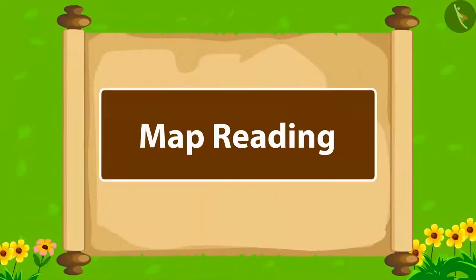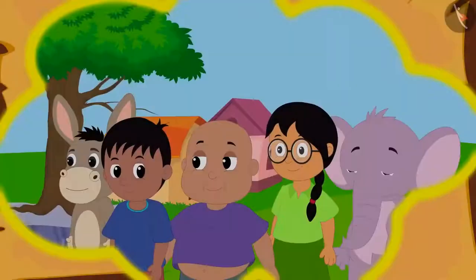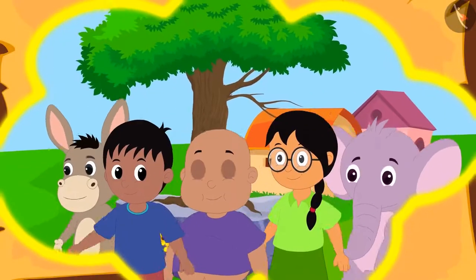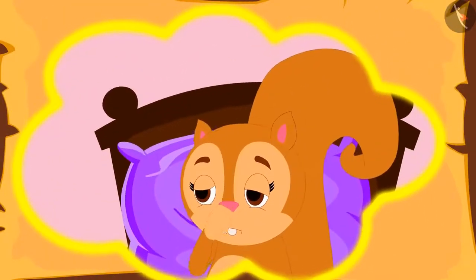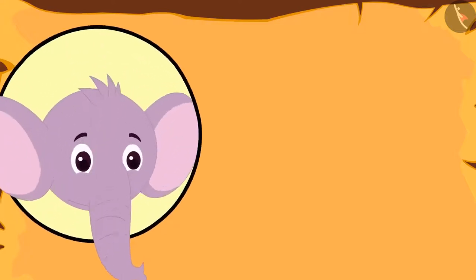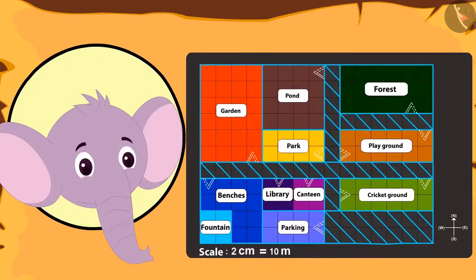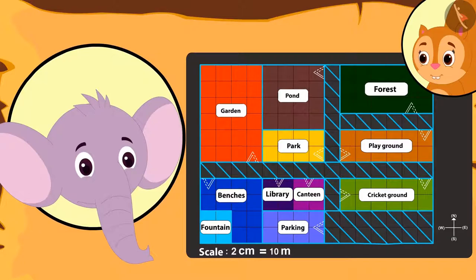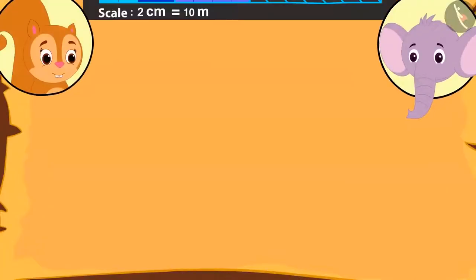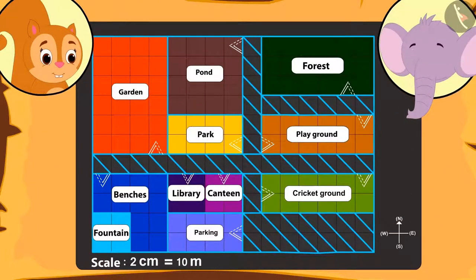Kids, in this video today we will learn more about reading a map. Everyone from school went on a trip. But being sick, Chanda could not go on the trip. While returning, Appu brings for Chanda a map of that place. He wanted to tell Chanda about what he saw there. Appu goes to Chanda's house and now he is showing her the map.